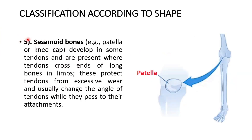The last category according to shape is sesamoid bones — for example, the patella, which is the kneecap. Here is the knee joint, the femur, and the tibia. Sesamoid bones develop in some tendons and are present where tendons cross the ends of long bones in limbs. They protect tendons from excessive wear and usually change the angle of tendons as they pass to their attachments.